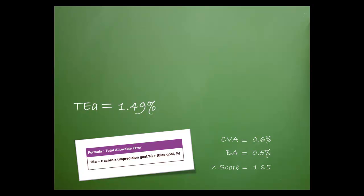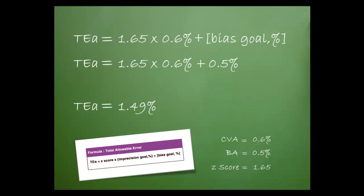The TEA is 1.49%. Here's how I got that figure. First, I substituted the values into the formula. Next, I multiplied and then added.